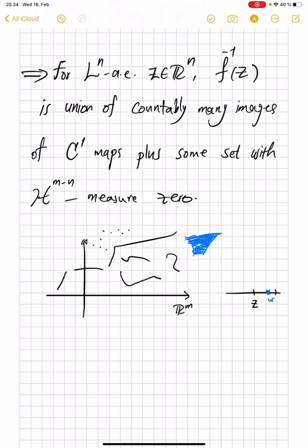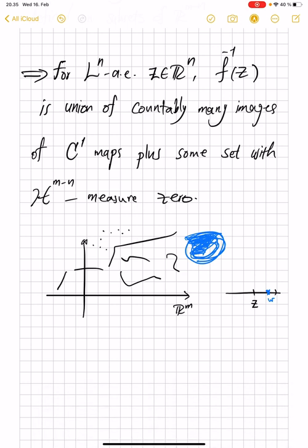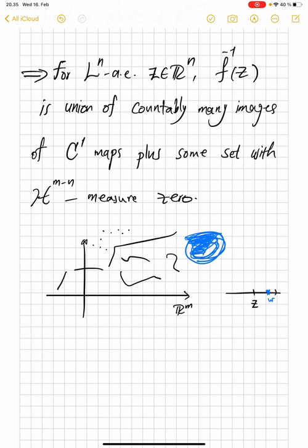Imagine, like, f being constant on this part of the set. But because of this theorem, we know that such w's are only a negligible part of the range. Okay, so that's the best picture of H^{m-n} zero sets that I can draw.